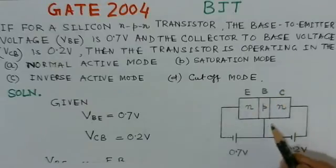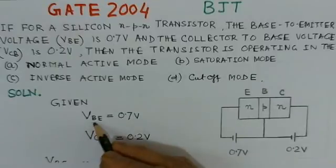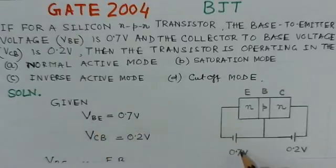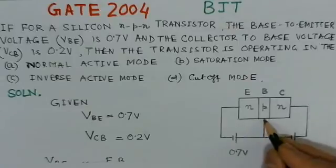this is the emitter, this is the base, this is the collector. See, the base voltage between base to emitter is 0.7, that means base is positive with respect to emitter by 0.7. So here,